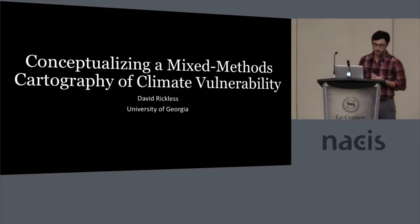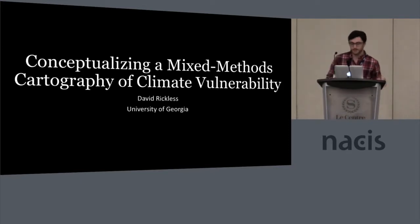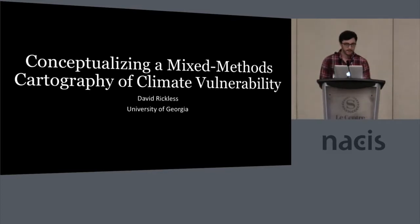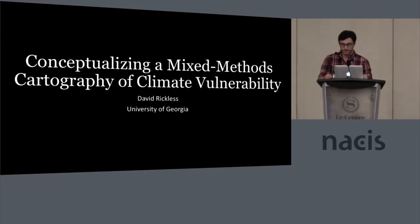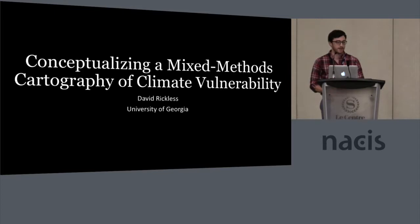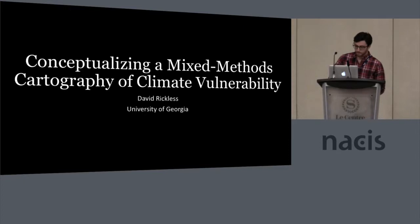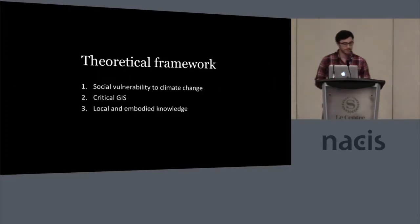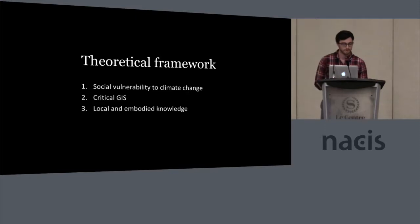I'd originally intended for this talk to be more about the design aspect and representing qualitative data visually, but it ended up that the project is not actually at that stage yet — that's just how it goes sometimes with research. So this talk is going to be fairly conceptual, a little bit of a change of pace. It's going to deal with the role of cartography in constructing and interpreting this idea of vulnerability. The thinking behind this research comes from three main branches of theory: social vulnerability, critical GIS, and local or embodied knowledge.